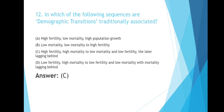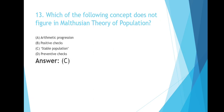Which of the following concepts does not figure in Malthusian theory of population? Option A: Arithmetic progression. Option B: Positive checks. Option C: Stable population. Option D: Preventive checks. The right answer is Option C — stable population.